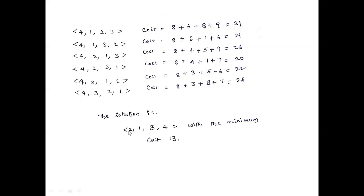The solution is the combination [2, 1, 3, 4]: assign the second job to person 1, the first job to person 2, the third job to person 3, and the fourth job to person 4. If we assign jobs this way, among all possibilities we get the minimum total cost. Thank you.